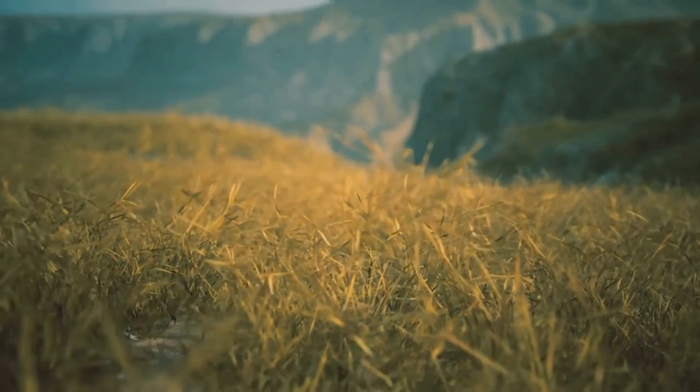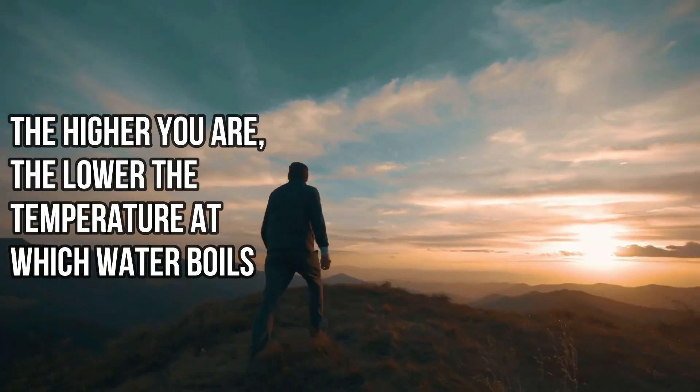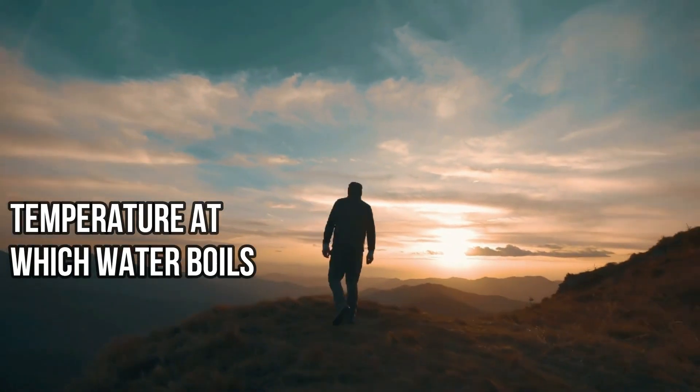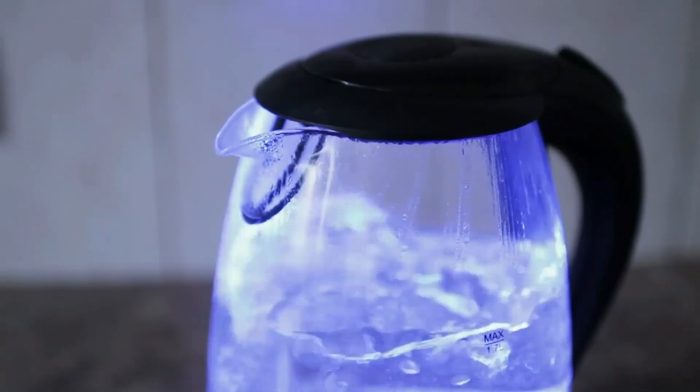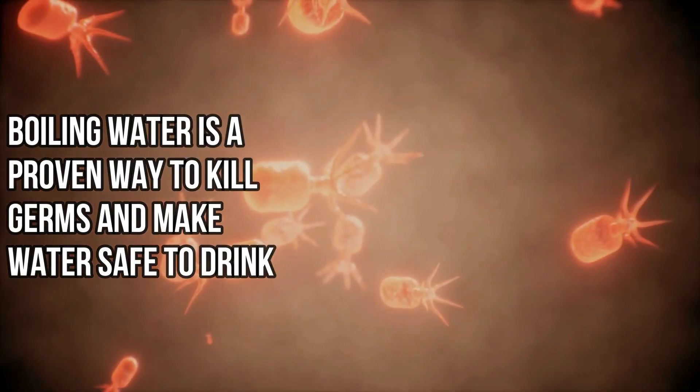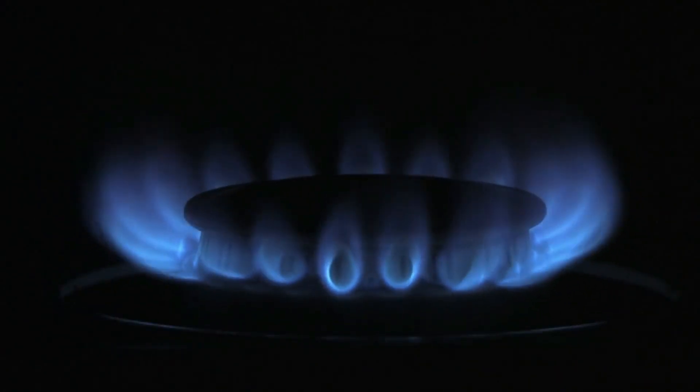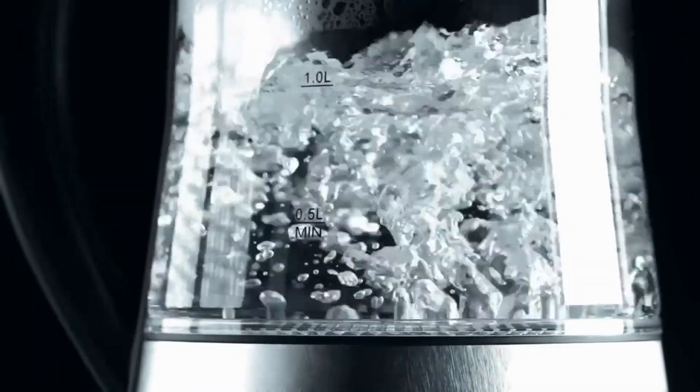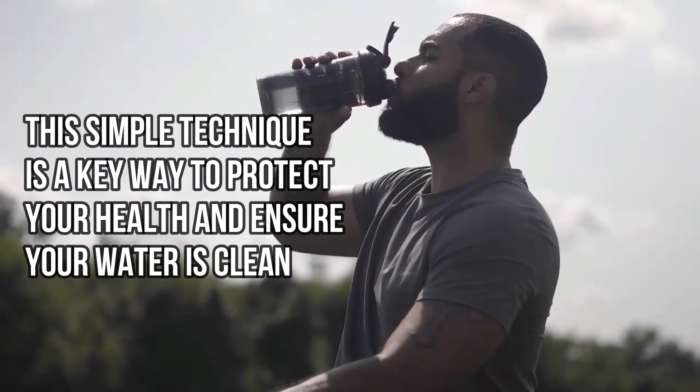The height above sea level or altitude changes how water boils. The higher you are, the lower the temperature at which water boils. This is important because it might change how long you need to boil your water to make sure it's safe. Boiling water is a proven way to kill germs and make water safe to drink. It's a method that relies on heat to destroy harmful organisms, and it works no matter where you are, although you might need to boil it a bit longer if you're in a high place. This simple technique is a key way to protect your health and ensure your water is clean.